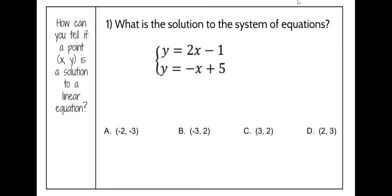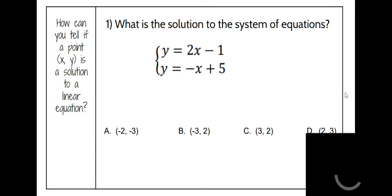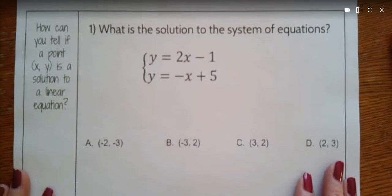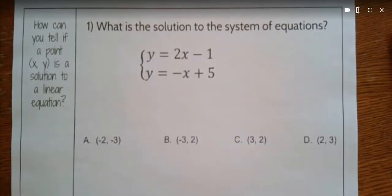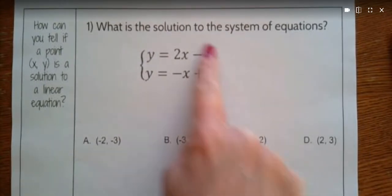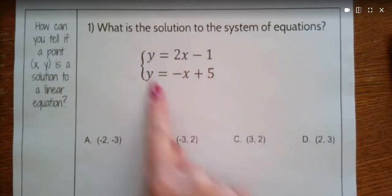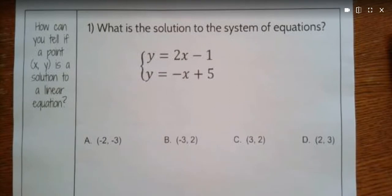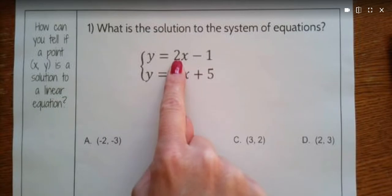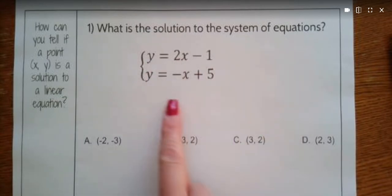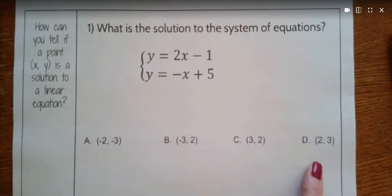Let's take a look at an example. On number one, it's asking what is the solution to the system of equations below. We've got four ordered pairs. The point at which the two lines intersect on a coordinate plane is going to be the solution. I can't just plug a point into one equation — the other equation has to go through the same point in order for them to intersect.